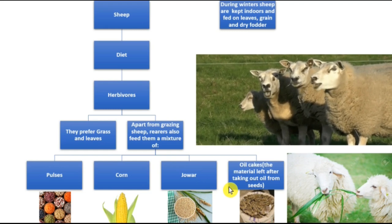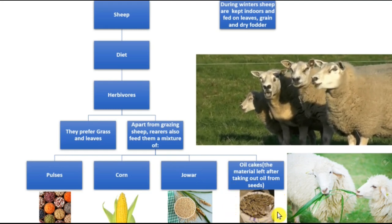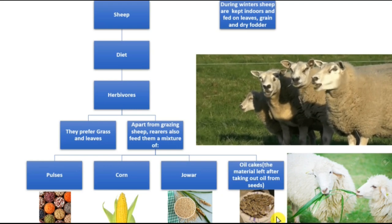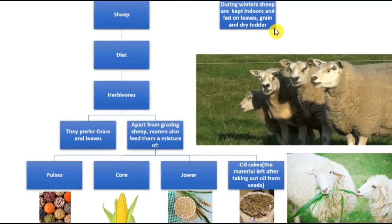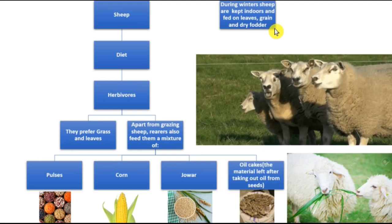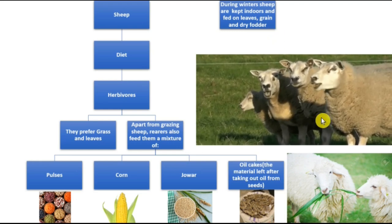Oil cakes are the material left after taking out oil from seeds — for example, the oil cake of cotton seed. During winters, sheep are kept indoors and fed on leaves, grain, and dry fodder.